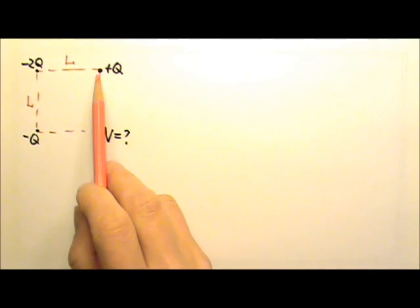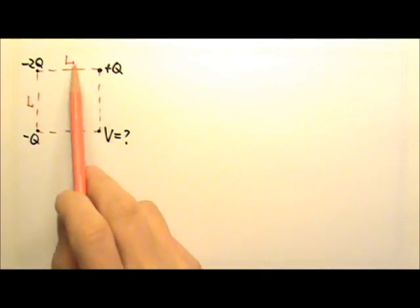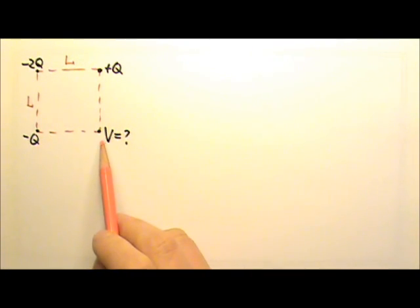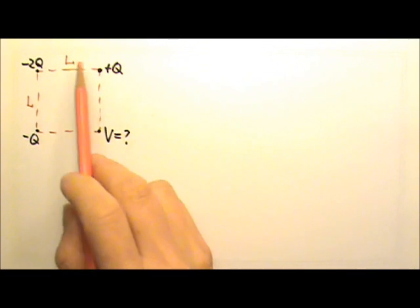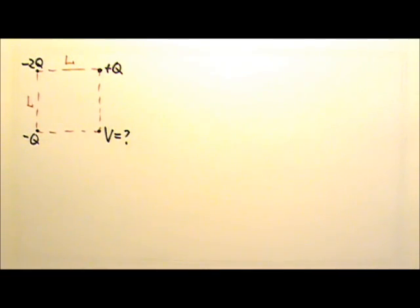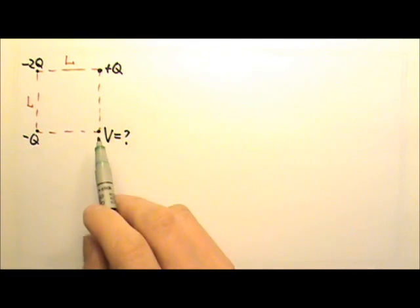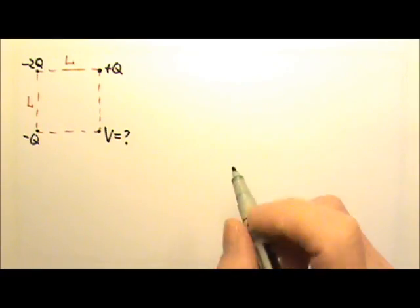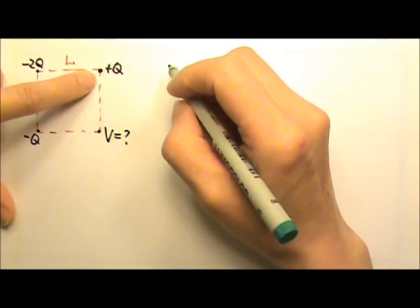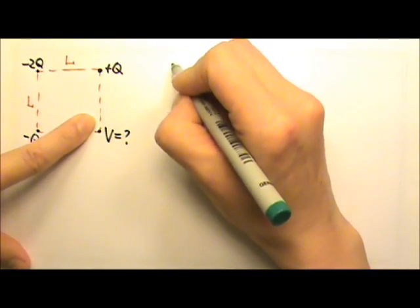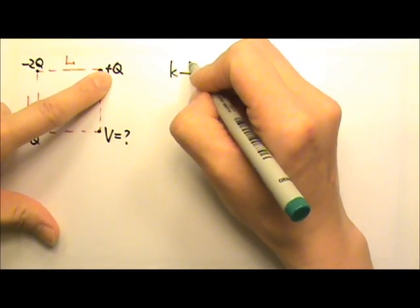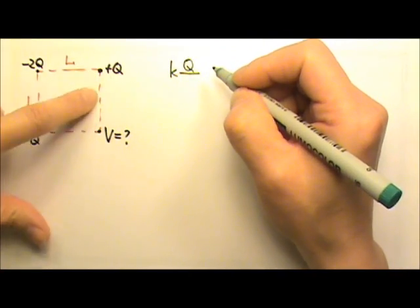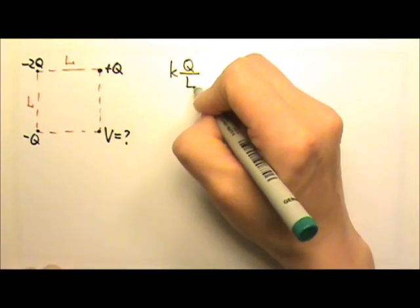Here we have three point charges at three corners of a square. And we're looking for the electric potential produced by these three point charges right there. So we have three point charges producing electric potential, and the potential is a scalar, so we just have to add the three scalars together, the three potentials. So this one gives us K positive Q, we must plug in the sign for the charge, over R, which is L.